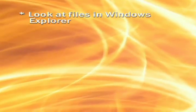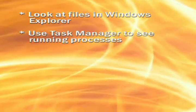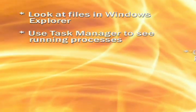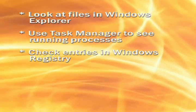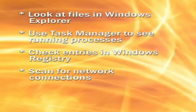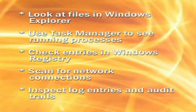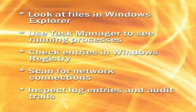To explain how attackers hide on your computer, first let's review how you ever know what's happening on a Windows PC. You probably do some of the following things: you look at files in Windows Explorer or by doing a DIR from the command line, you might use Task Manager to see running processes, you could check entries in the Windows registry using regedit, you could scan for network connections using a command like netstat, and you'd probably inspect log entries and audit trails.